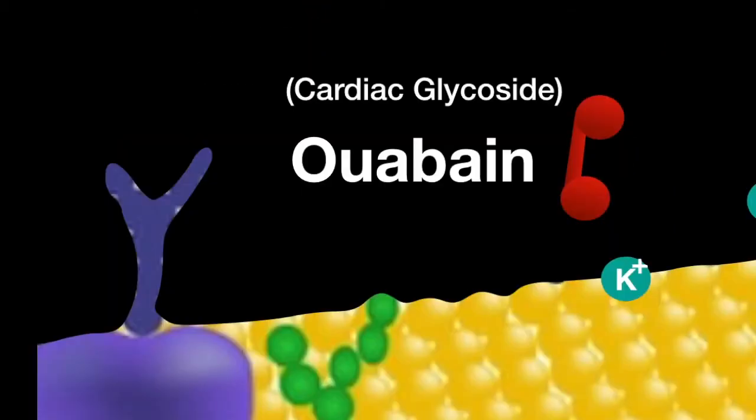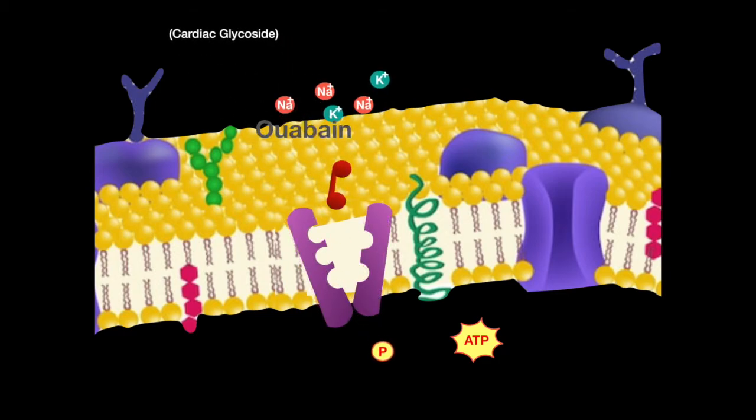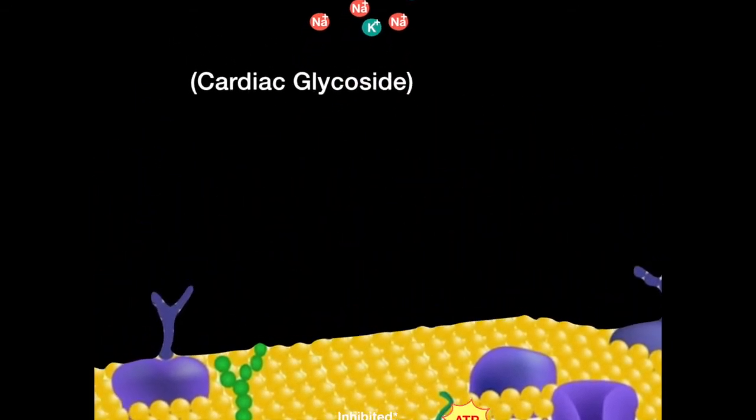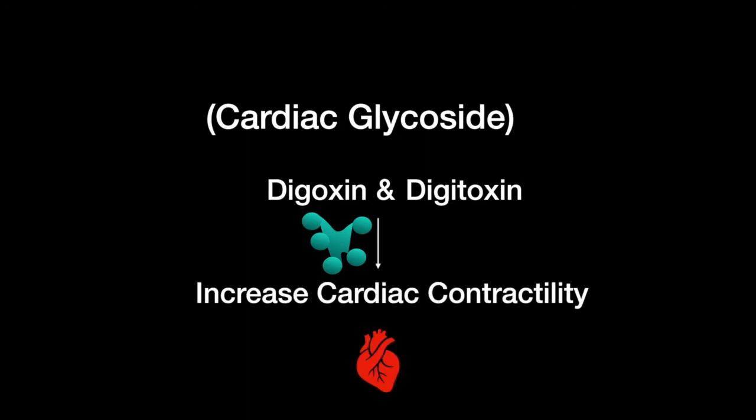Ouabain is a cardiac glycoside that inhibits the pump by binding to the potassium ion site. Other cardiac glycosides, digoxin and digitoxin, can be used to increase cardiac contractility, making your heartbeat stronger.